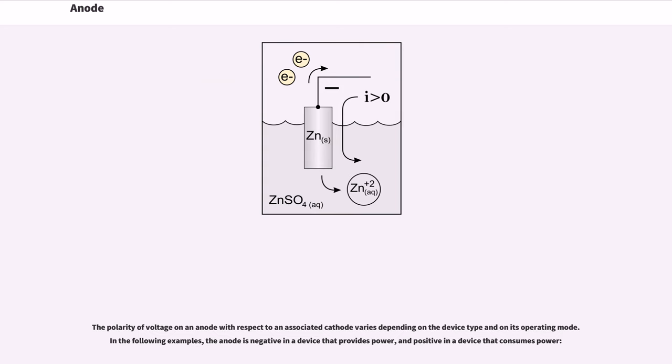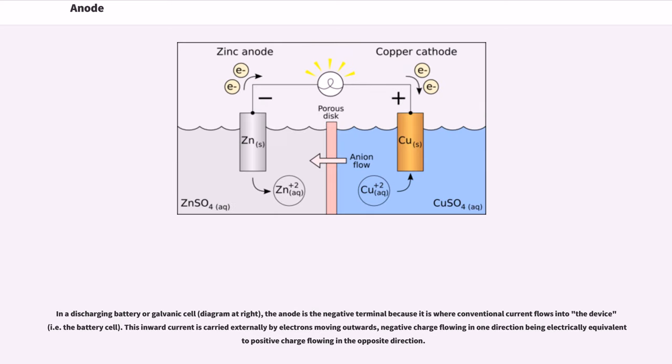The polarity of voltage on an anode with respect to an associated cathode varies depending on the device type and on its operating mode. In the following examples, the anode is negative in a device that provides power, and positive in a device that consumes power. In a discharging battery or galvanic cell (diagram at right), the anode is the negative terminal because it is where conventional current flows into the device, i.e. the battery cell.